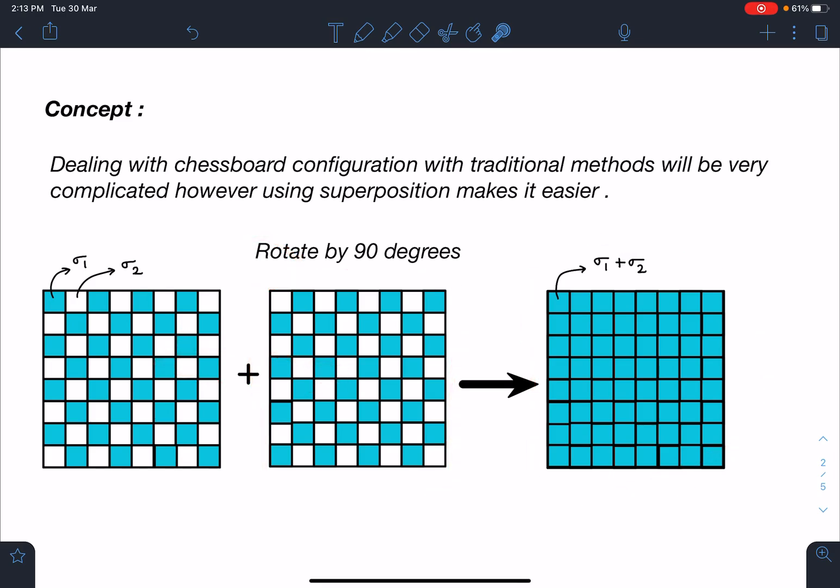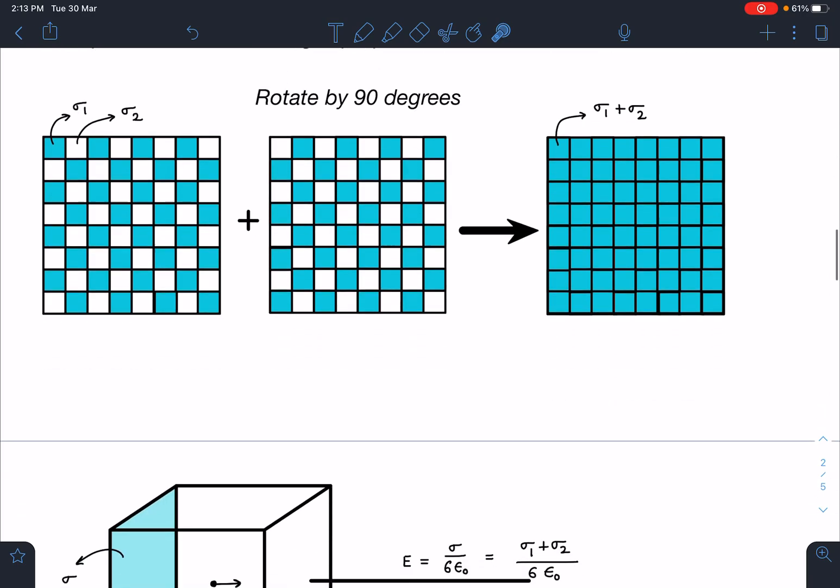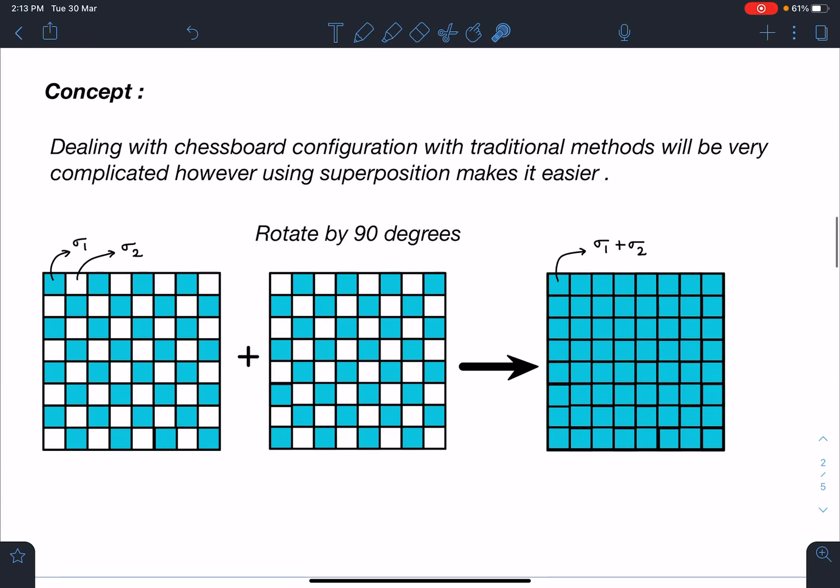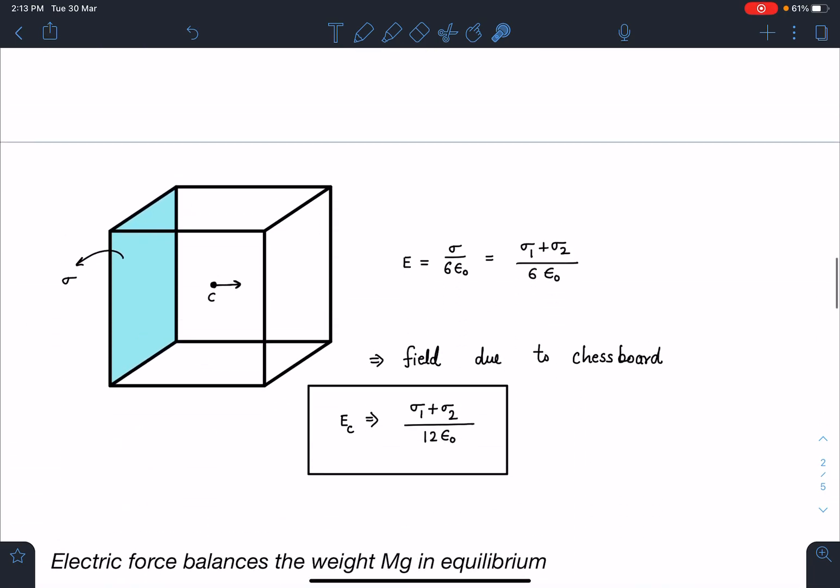I think now the idea will be coming to your mind that it was really easy. Here you can see, this is a cube of side length L, and this distance is L/2. So this is equivalent to calculating field at the center of the cube due to one face.